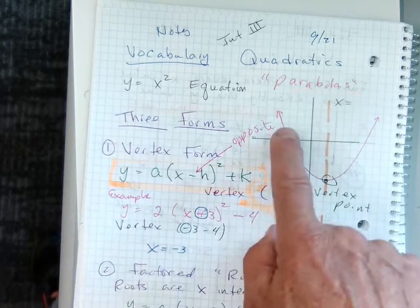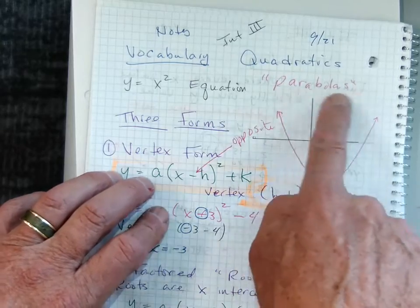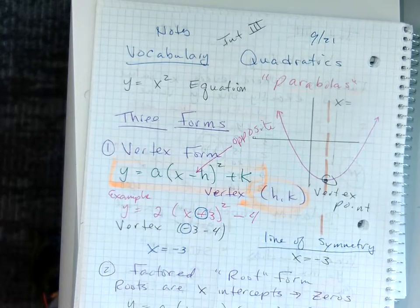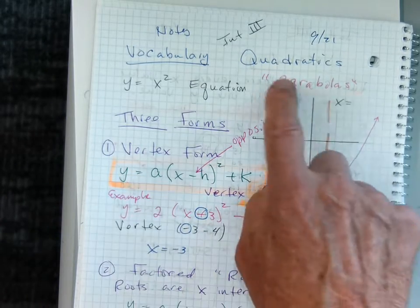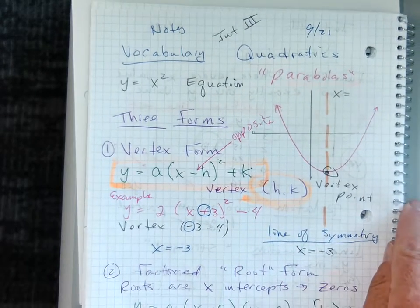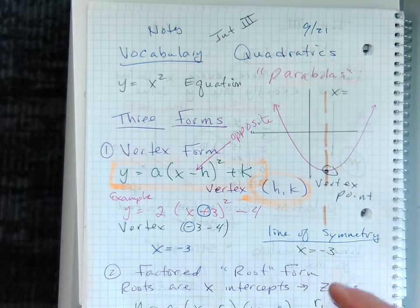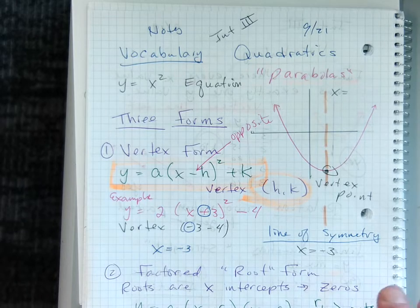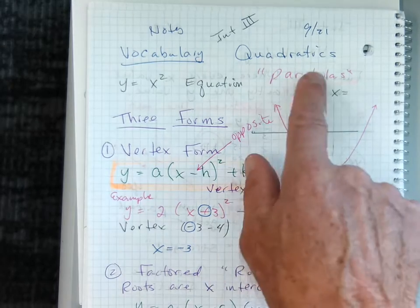And with x squared equations, they have this shape, which we call parabolas. So it's easy to just call them parabolas. However, they are called quadratics specifically from the quadratic equation, which we'll learn later. Now, there are three forms that quadratics come into.